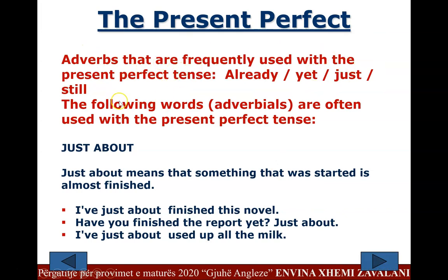Adverbs frequently used with the present perfect tense: 'just about' means that something that was started is almost finished. Examples: 'I've just about finished this novel.' 'Have you finished the report yet? Just about.' 'I've just about used up all the milk' — meaning almost finished, almost done.